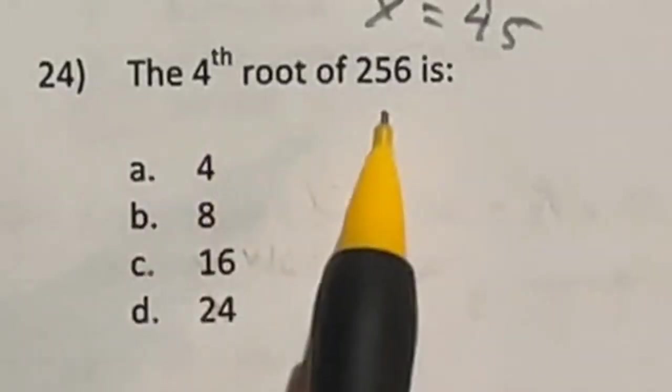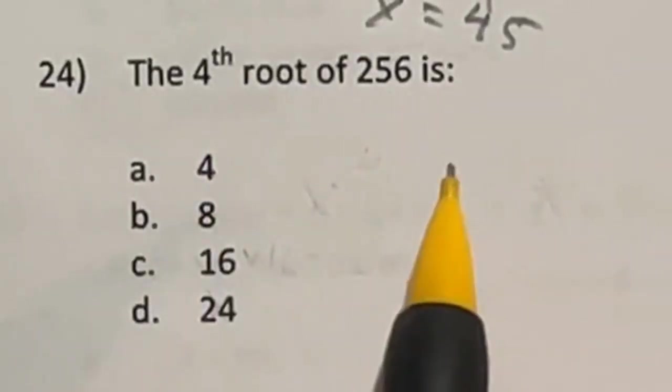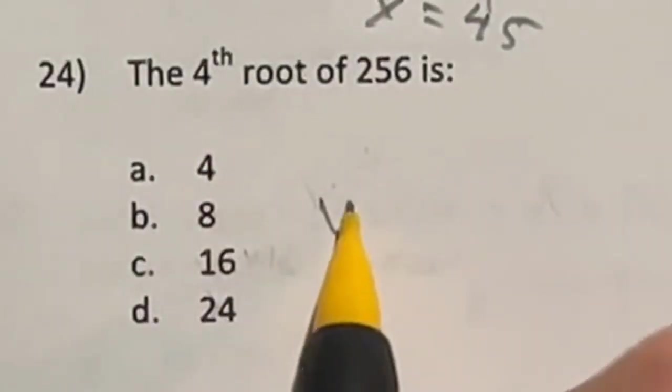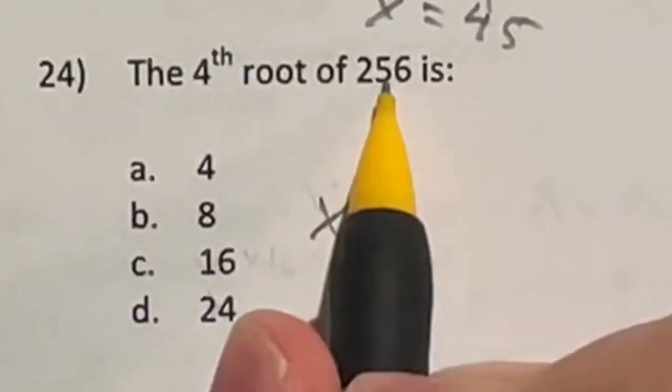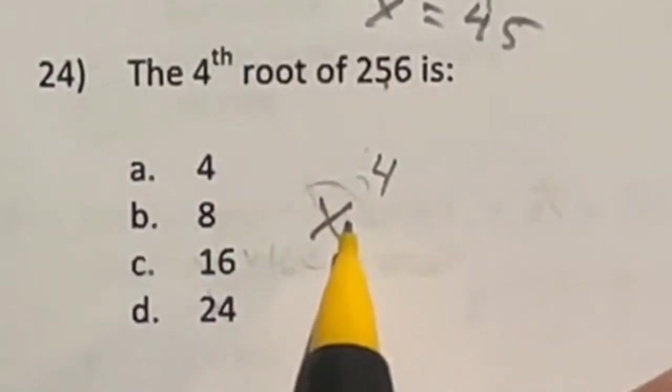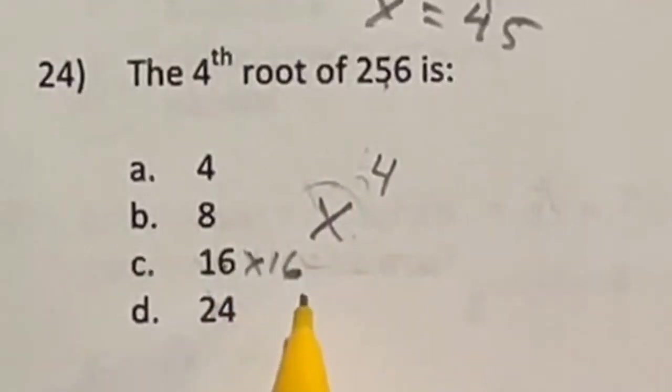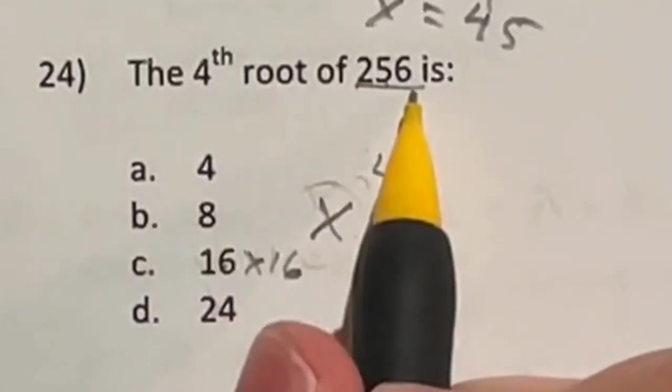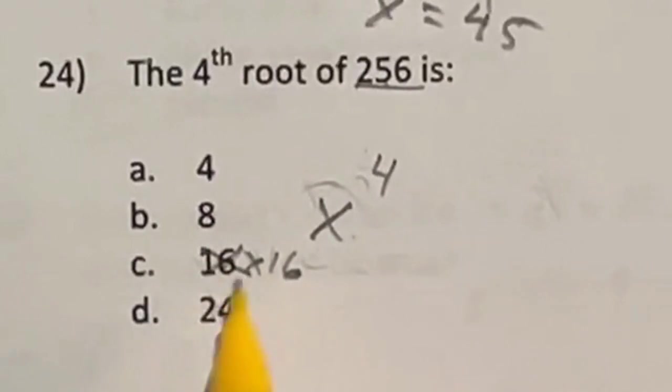Number 24 says the fourth root of 256 is what? Well, fourth root means you're taking a number raised to the fourth power and it gives you this. What's that number? Well, I know that 16 times 16 is already going to be 256. So that's just squared, so that guy's out. 24 is larger than that, so that's out as well.